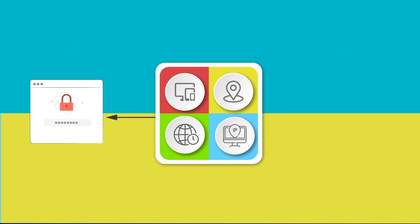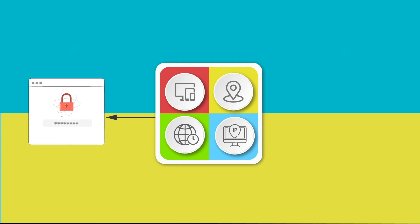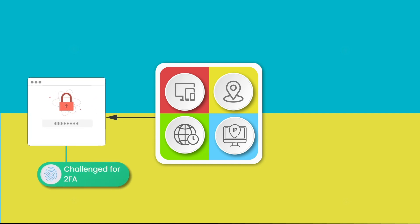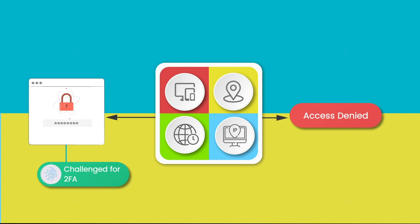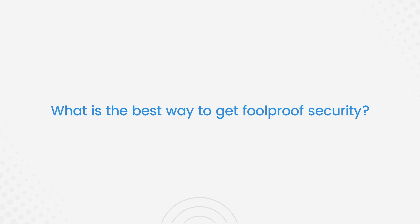The user can either log in the usual way — simply through a password to gain access. Or they can offer proof by going through additional authentication via second-factor authentication. Or access can be denied — the user is denied their requested information access.